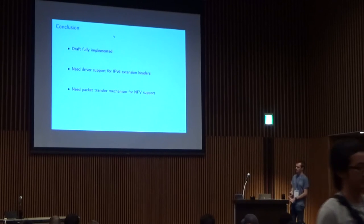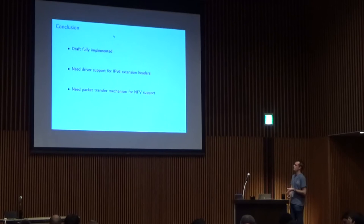The IETF draft is fully implemented. We'd like to have some driver support for IPv6 extension headers and some packet transfer mechanism for NFV support. I didn't talk about it in this presentation because it's not the purpose, but it's worth mentioning that segment routing enables some network programmability by delivering an SDN protocol. Imagine that you have routers and hosts that talk to some controller about some packets and the controller will say, okay, for that flow you can impose this SROH. With the segment list you can basically steer your packet through any path the controller says. You can make it follow any service function chain you want to and you can do a lot of stuff with that.